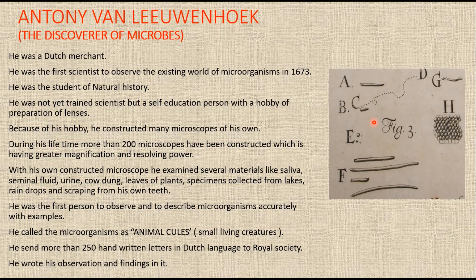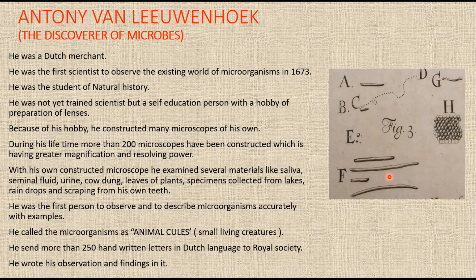In 1683, he described and sketched different forms of animalcules — rods, spirals, and other shapes — which are the morphological forms of bacteria. You can see the spiral form, a curved shape, and rod shapes here. This was the first recorded observation of bacteria, and even today his morphological classification of animalcules holds good for bacteria.